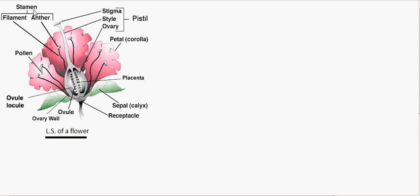Then comes the male reproductive part, the stamen or the androecium, which consists of two parts: the anther and the filament. And the female reproductive part, the pistil or the gynoecium, which consists of three parts: ovary, style and stigma.